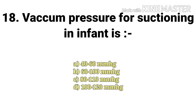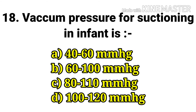The next question: vacuum pressure for suctioning in an infant — options are 40 to 60 mmHg, 60 to 100 mmHg, 80 to 110 mmHg, and 100 to 120 mmHg.